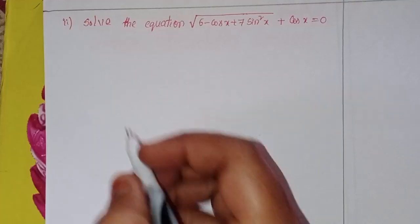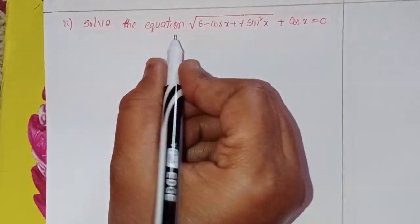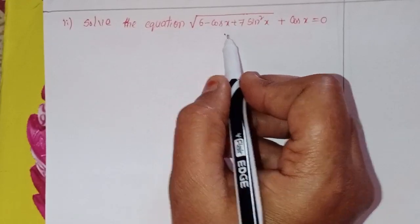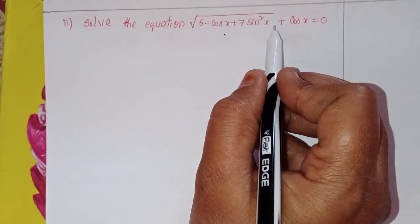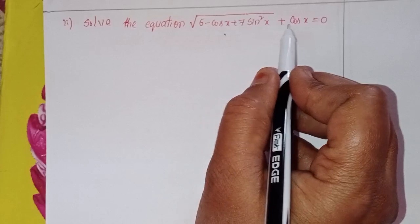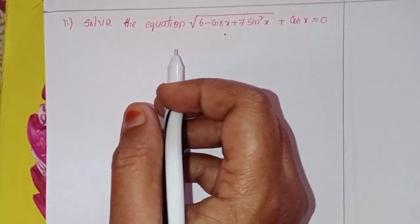Second problem: solve the equation square root of (6 minus cos x plus 7 sin²x) plus cos x equal to 0.